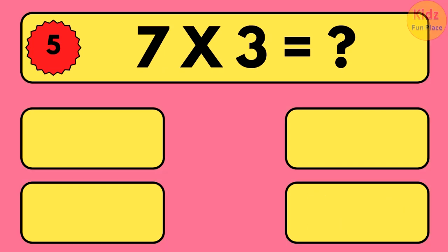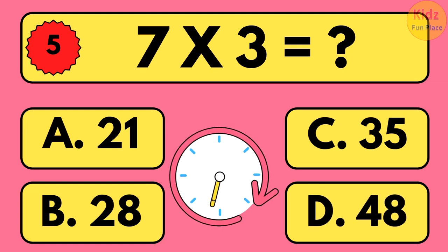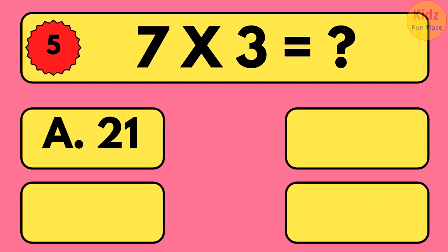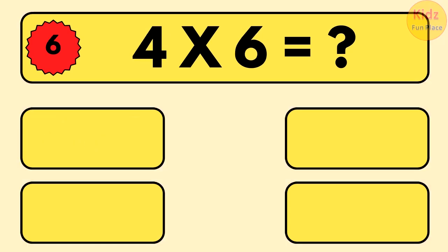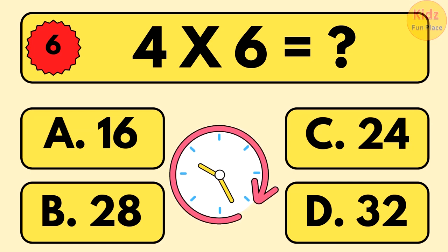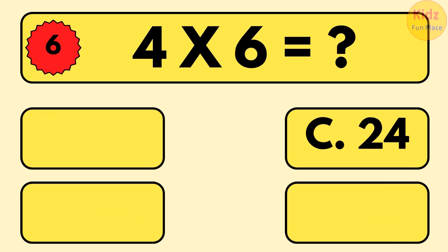7 times 3 is equal to what? 7 times 3 is equal to 21. 4 times 6 is equal to what? 4 times 6 is equal to 24.